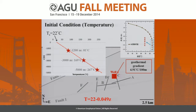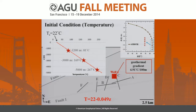Finally, we have the initial conditions. We use hydrostatic pressure. For temperature, the annual average surface temperature is about 22 degrees C, and we have a geothermal gradient of about 50 degrees C per kilometer from well one. So the initial temperature used in the simulation follows these formulas combining the surface temperature and the geothermal gradient.